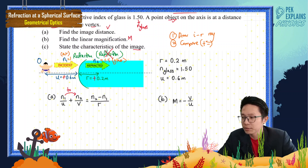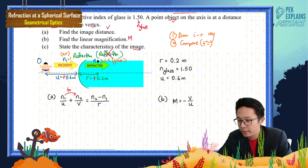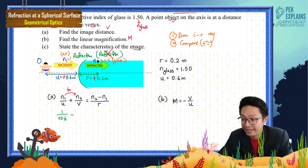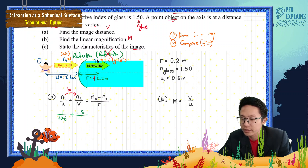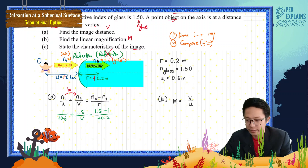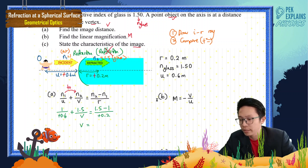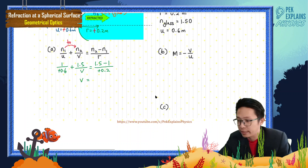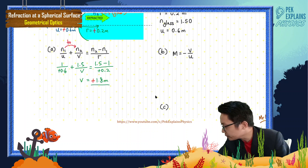Now substitute all values into the refraction formula: N1/U + N2/V = (N2 - N1)/R. With N1 = 1, U = positive 0.6, N2 = 1.5, and R = positive 0.2, we calculate the image distance V. The result is V equals positive 1.8 meters.